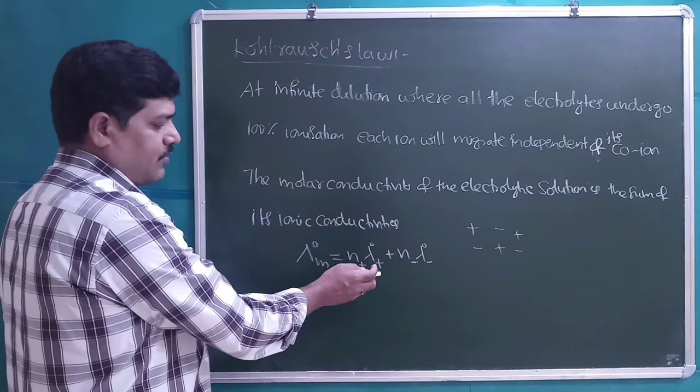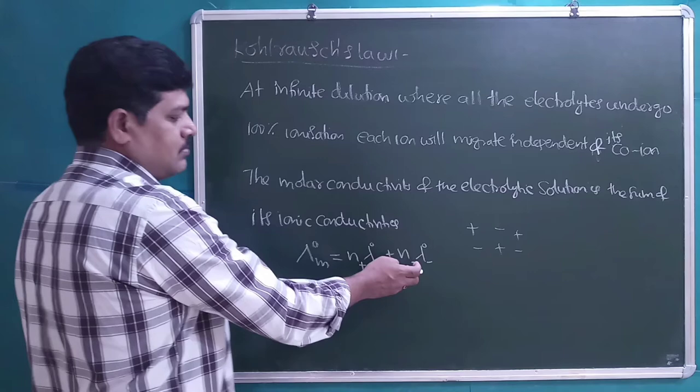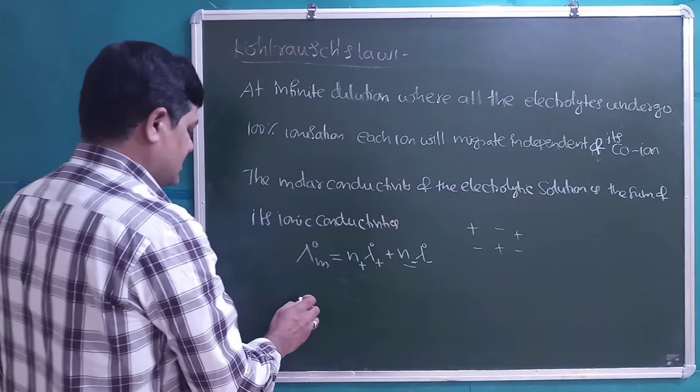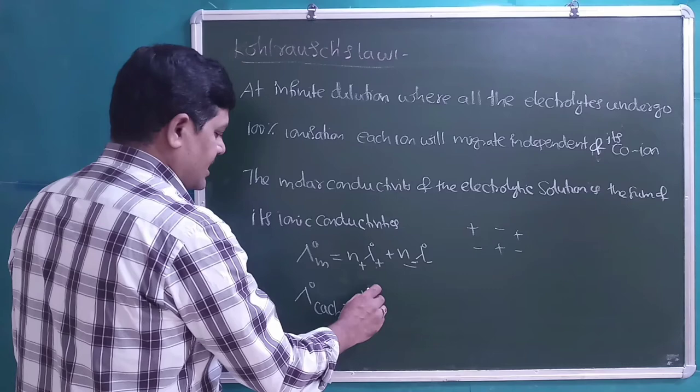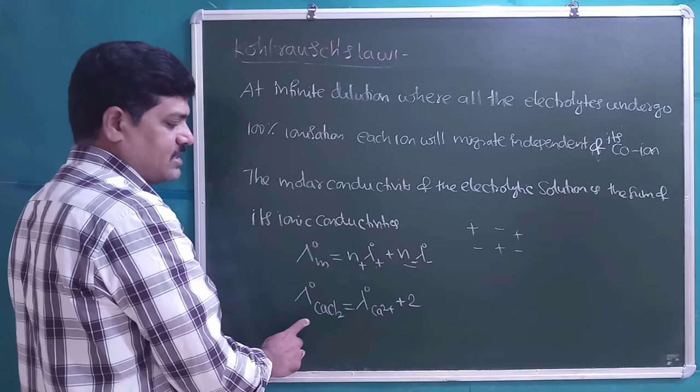In equation form: λ°m = n₊ × λ₊ + n₋ × λ₋, where n₊ is the number of cations, λ₊ is the ionic conductivity of the cation, n₋ is the number of anions, and λ₋ is the ionic conductivity of the anions. For example, for CaCl₂: the number of Ca²⁺ ions is 1, and it produces 2 Cl⁻ ions.